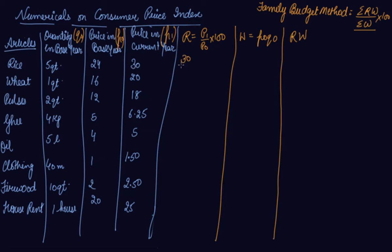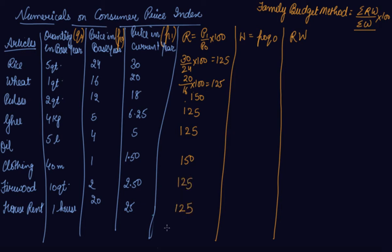Let's find R first. The price relative for the first item is 30 divided by 24 into 100, which gives 125. Then 20 divided by 16 into 100 gives 125. Then 18 divided by 12 into 100 is 150. The remaining items each give 125. For the weights, P0 into Q0 gives: 5 into 24 is 120, 1 into 16 is 16, and then 20 for the remaining items. Summation W equals 280.